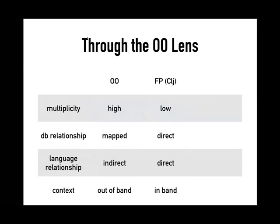We need to step back and evaluate why we do these things through an object-oriented lens — that's where most of us came from. This is not an OO-bashing slide; it's an objective analysis of what's different in Clojure from object-oriented languages. The first thing that substantially impacts how we work is type multiplicity. In OO we have a high degree of types — you're encouraged to make a new type every time you have a new entity. In functional programming, specifically Clojure, we eschew making new types. We use HashMap again and again, vectors and sets. We keep multiplicity quite low.